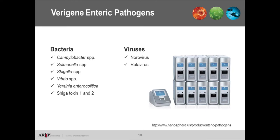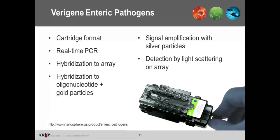Scaling up to a broader panel is the Verigene Enteric Pathogen Test, which detects both bacteria and viruses. In addition to the bacteria detected by the other manufacturers, it includes Vibrio and Yersinia enterocolitica, as well as norovirus and rotavirus. This test uses a cartridge format with real-time PCR hybridization to an array, followed by oligonucleotide hybridization to gold particles with silver signal amplification detected by light scattering.